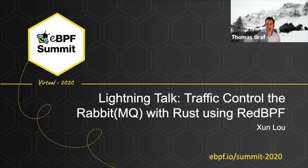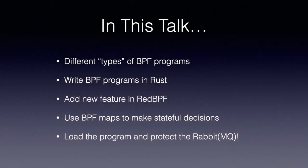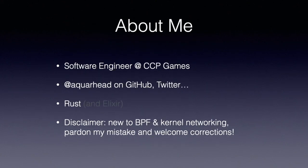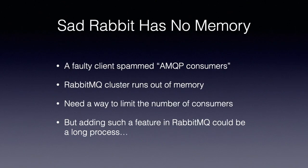Next up is Xan Lu. In this talk, we will see how to use Rust and BPF to analyze a layer 7 protocol such as AMQP and use BPF maps to conditionally drop some packets in order to protect the backend service. My name is Lo Xun and I work as a software engineer at CCP Games. My job involves managing our RabbitMQ cluster. RabbitMQ is a message bus service that speaks the AMQP protocol.